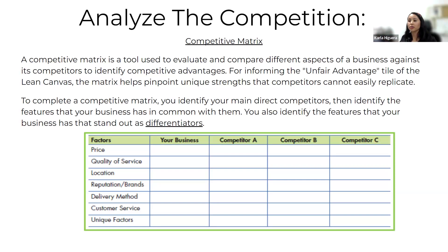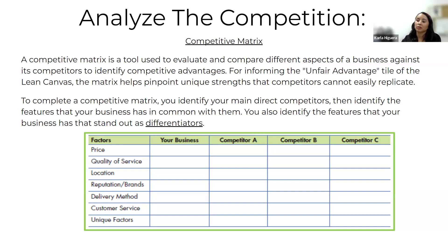As you get to know your business's pros and cons, you'll identify different factors — some may not apply to you, but this is the main template. We talk about price, quality of service, location, reputation, delivery method, customer service, and unique factors. On this slide, you're going to put your business, rate it, then choose three companies that do essentially what your business does and compare those to yours.